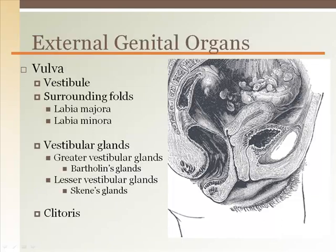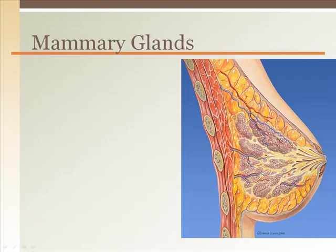The external genital organs are referred to as the vulva. The space within is the vestibule, surrounded by skin folds. The inner skin fold is the labia minora and the outer is the labia majora. There are two main pairs of glands within this region: the greater vestibular glands, also known as Bartholin's glands, located outside the vaginal entrance, and the lesser vestibular glands on either side of the urethral opening. The clitoris is a mass of erectile tissue with structural similarities to the penis, located just under the anterior junction of the right and left labia minora.